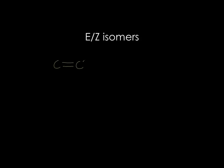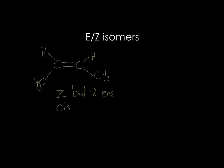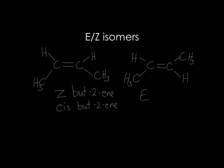EZ isomers — we get a new form of isomerisation with alkenes. When you have two different groups bonded to each of the carbon atoms of a carbon-carbon double bond, you get this isomerism. Because it can't rotate, you get a Z isomer where both of those groups are on the same side of the double bond — we sometimes call it cis. They can also be bonded across the double bond, and we call that the E isomer — in this case, E-but-2-ene, or trans-but-2-ene.